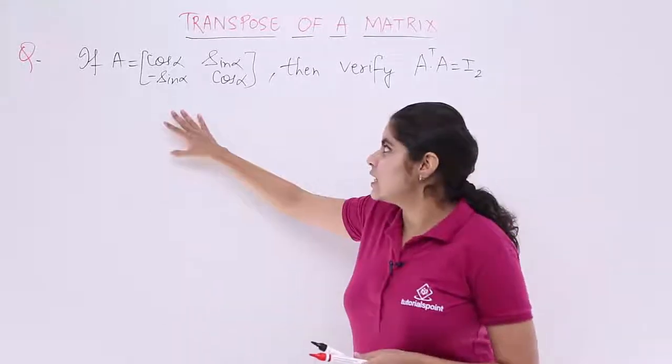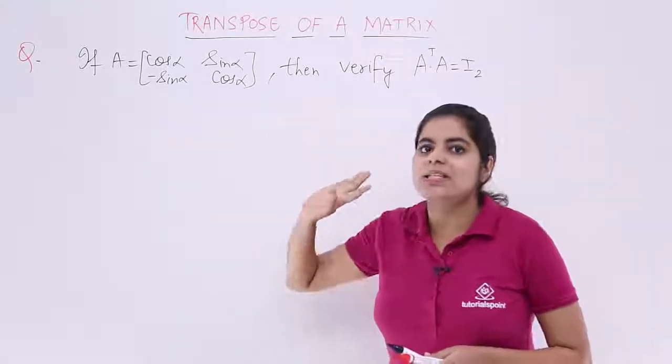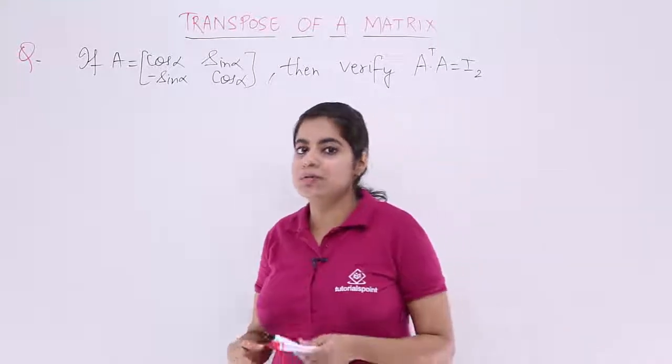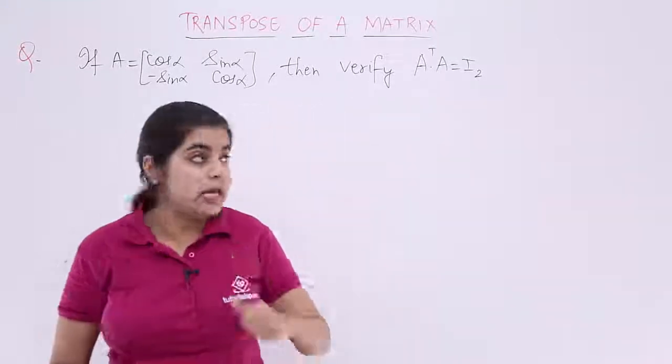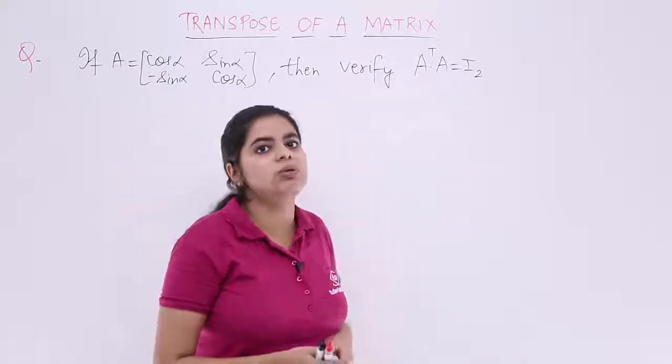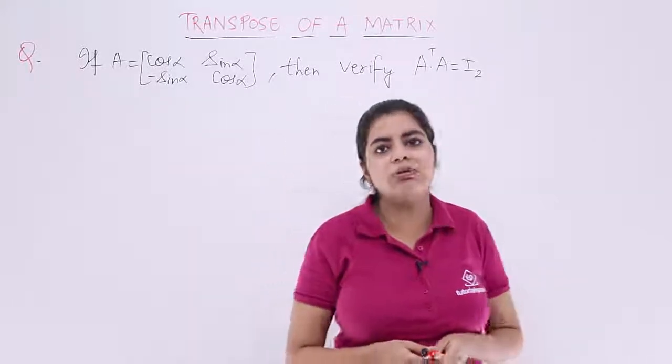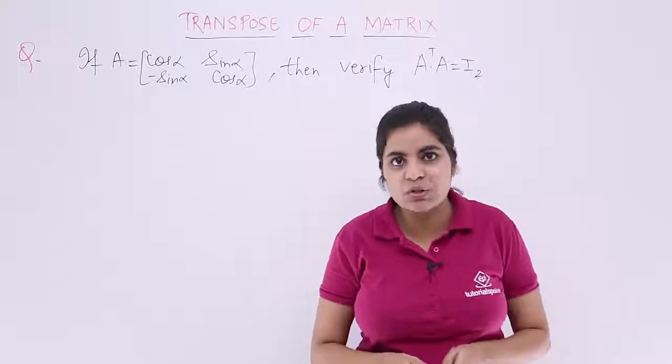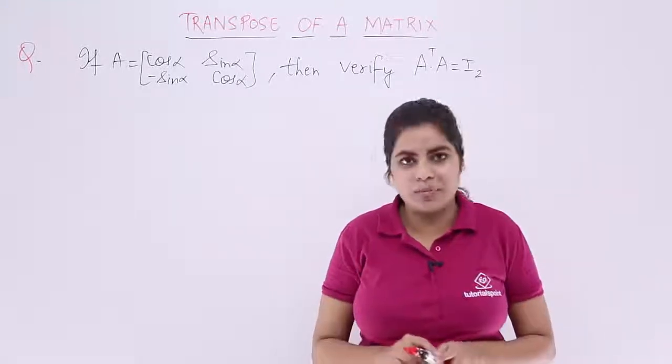The question is if A is a matrix, it is a 2x2 matrix involving trigonometric functions and it is given to you. Then you have to verify A transpose multiply by A is equal to I₂. What is I₂? It is identity matrix of the order 2: 1, 0, 0, 1, a 2x2 matrix.